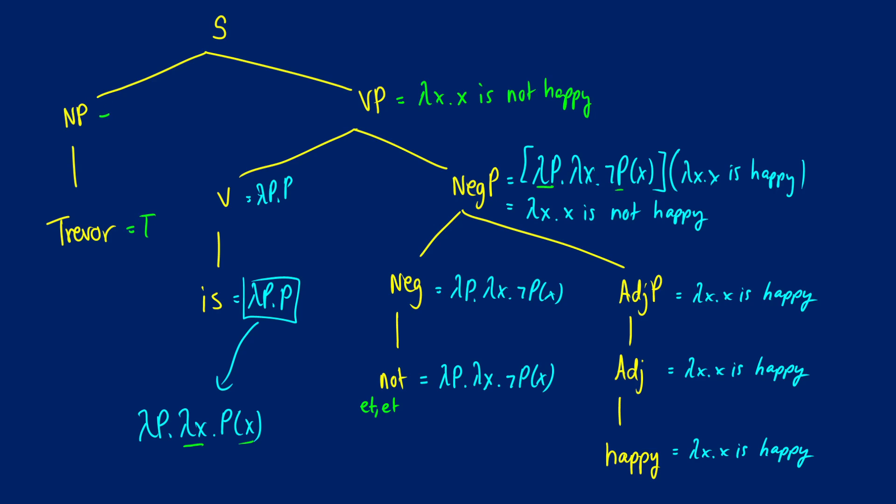Okay, and then Trevor, we're going to call this t. The noun phrase is going to be t. So this is going to be true if and only if Trevor is not happy.